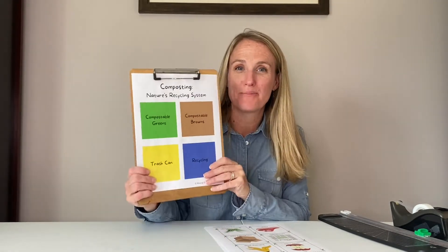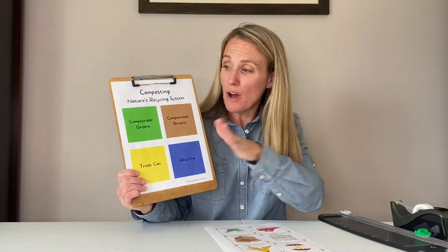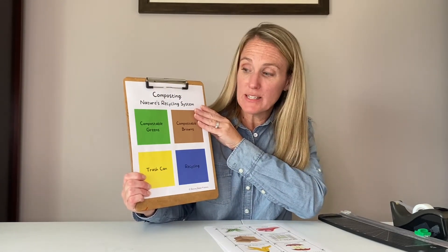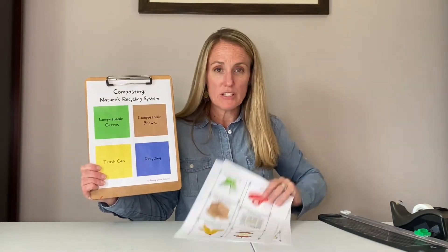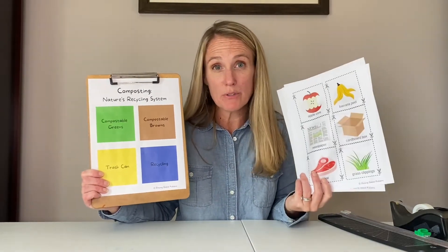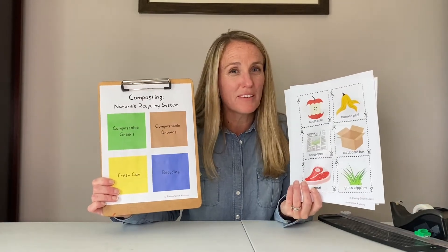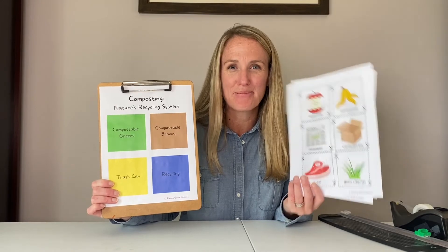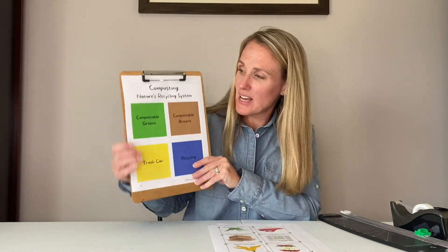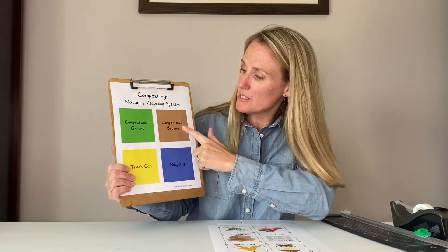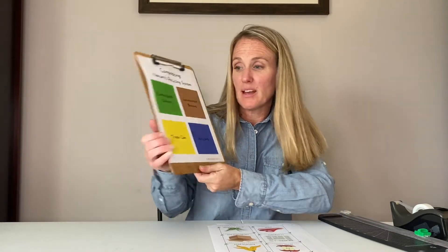Today we are going to test your knowledge about composting by playing a little sorting game. Hopefully you printed off the sorting sheet and also the three pages of items. If not, no big deal — just pause the video, print them off, and come back. Make sure you have the sheet set to the side that says 'compostable greens,' 'compostable browns,' 'trash can,' and 'recycling.'